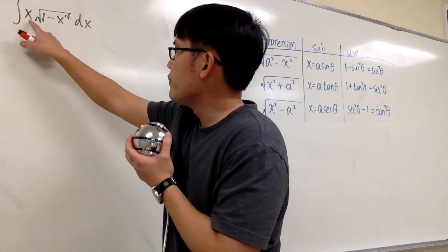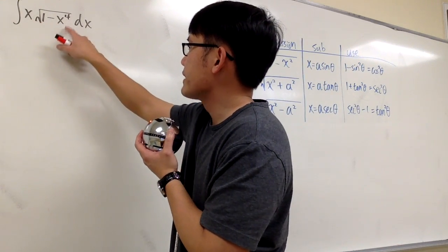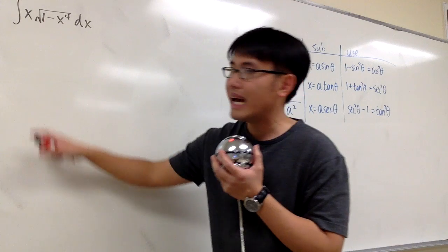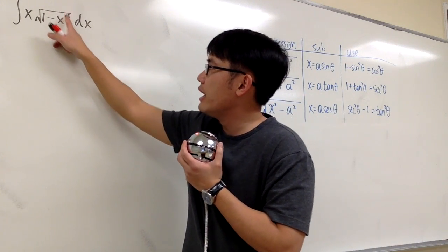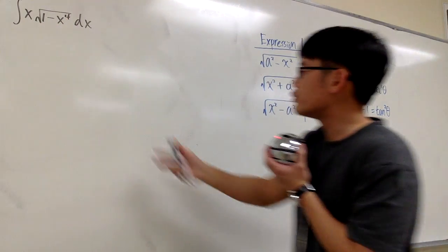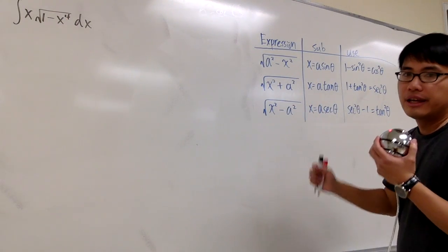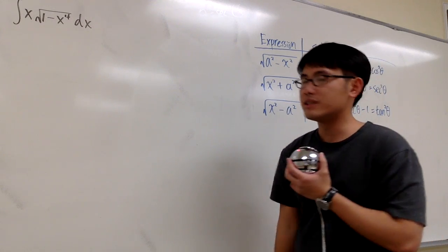Let's work out the integral of x times square root of 1 minus x to the fourth power. Because we have x to the fourth power right here, this is not really one of these forms yet, so we have to do some change first.